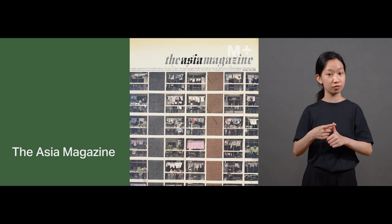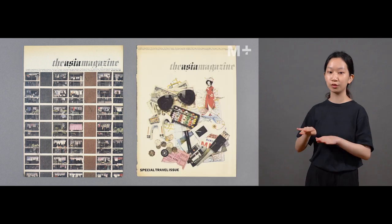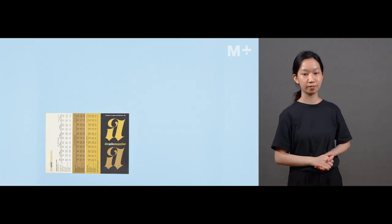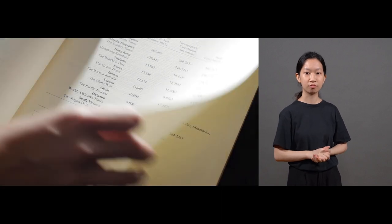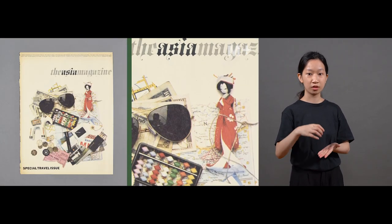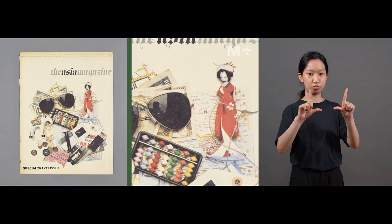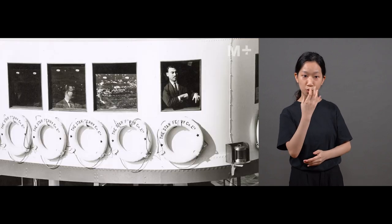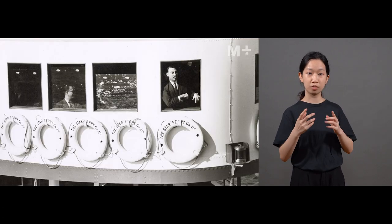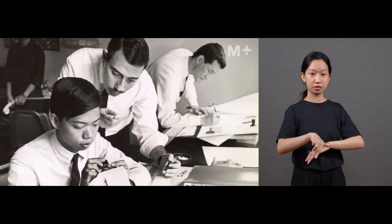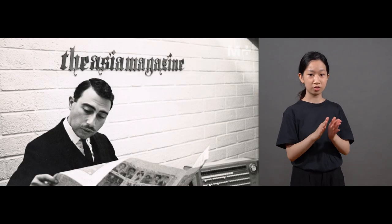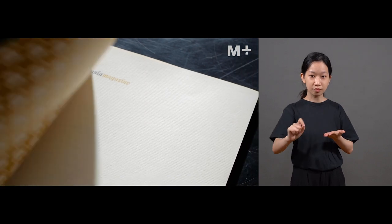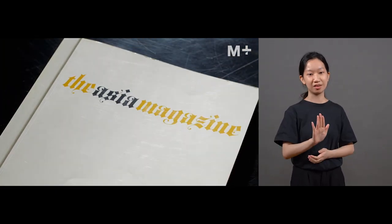The first project we should talk about is the Asian magazine because this is where it all begins. It was the most widely circulated English magazine about Asia. These were all printed in Tokyo and then the headquarters moved to Hong Kong and that's what brought Steiner to Hong Kong in 1961 as the art director. And you could tell even from the logo, the Asian magazine, this is all Steiner's hand and intervention, almost a script-like font.